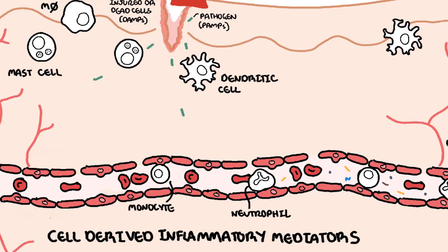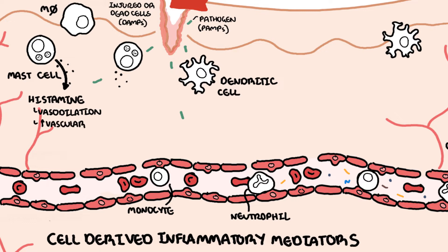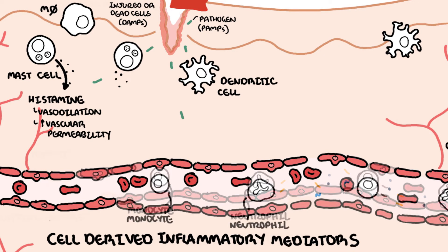Injury to the tissue releases damage-associated molecular patterns and pathogen-associated molecular patterns. Mast cells in the area detect this and release preformed granules containing serotonin and histamine. Histamine causes vasodilation, increasing blood flow to the area, and increases vascular permeability, allowing fluid, plasma proteins and cells to enter the site of injury.